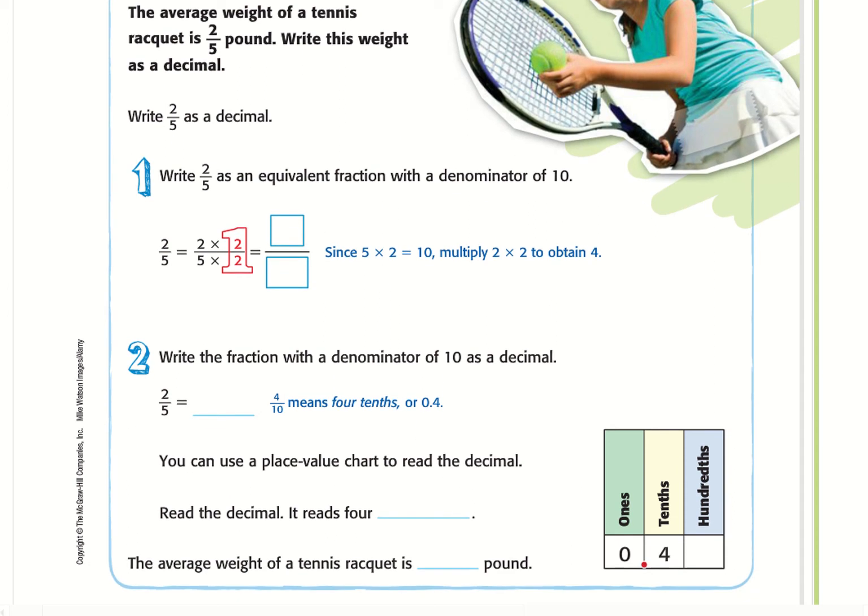Write 2/5 as an equivalent fraction with a denominator of 10. We want our denominators to be a power of 10 because if it's a power of 10, it's easy to convert into a decimal.